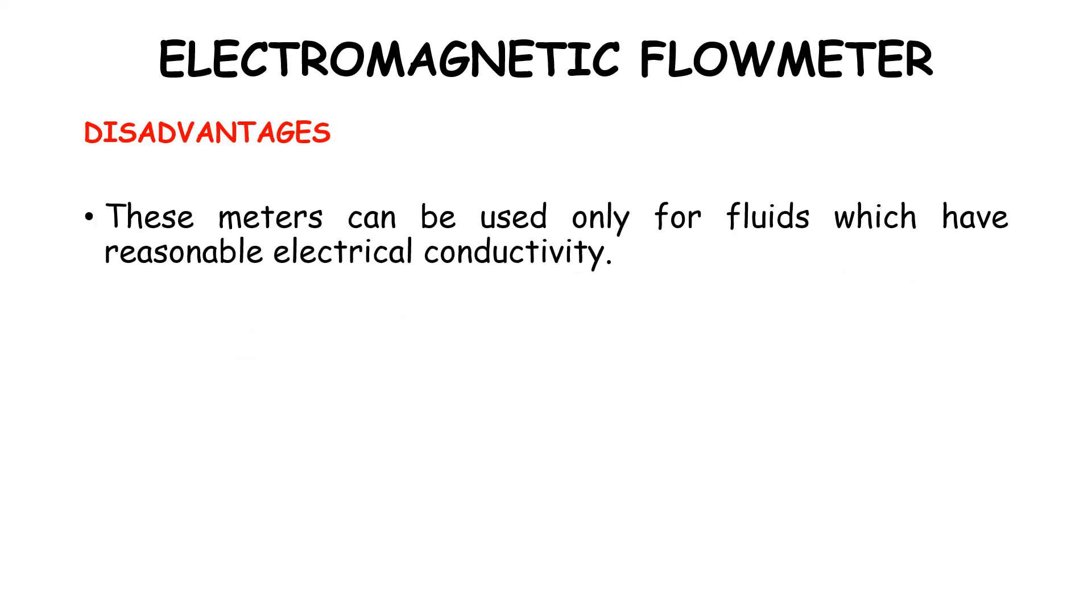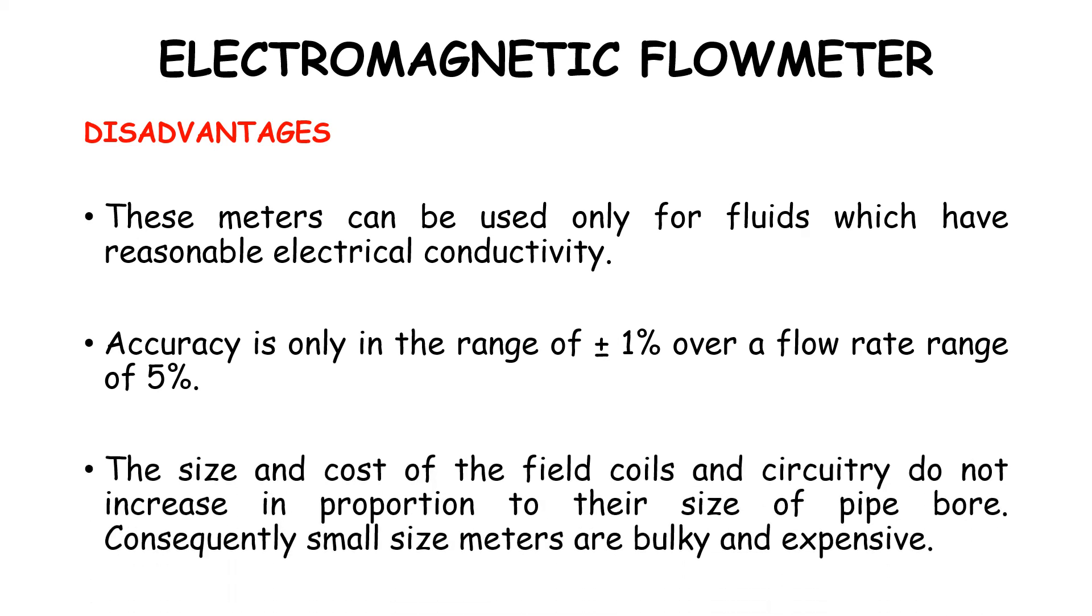Moving on to the disadvantages: these meters can be used only for fluids which have reasonable electrical conductivity. Accuracy is only in the range of plus or minus 1% over the flow rate range of 5%. The size and cost of the field coils and circuitry do not increase in proportion to the size of the pipe bore. Consequently, small size meters are bulky and expensive.